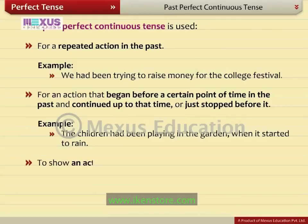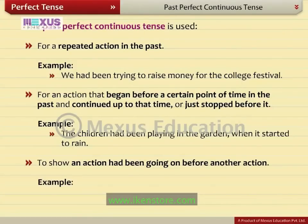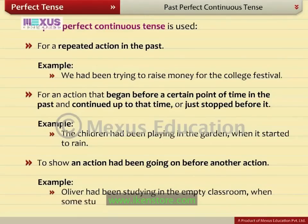The past perfect continuous tense is also used to show an action that had been going on before another action. For example, Oliver had been studying in the empty classroom when some students entered.